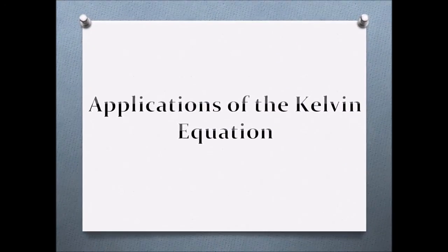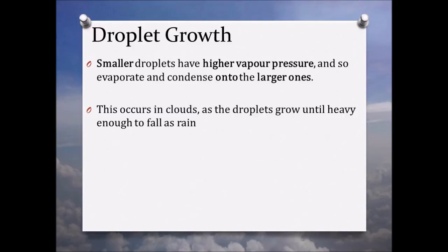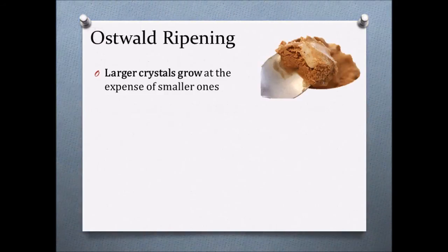Kelvin's equation can be used to explain phenomena such as droplet growth. If there are droplets of different size present, since smaller droplets have higher vapor pressure, they will evaporate and condense onto larger ones. This occurs in clouds, where droplets grow until they are heavy enough to fall as rain. The same process also happens with solids or crystals,